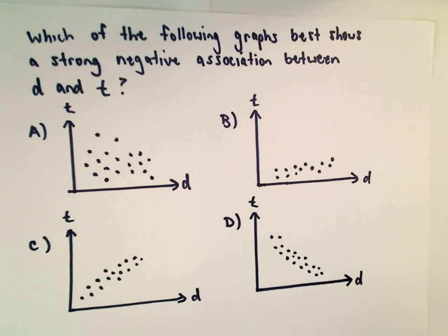So in this question, we want to know which of the following graphs best shows a strong negative association between D and T. To have a strong negative association, it basically says as one quantity goes up, the other one goes down.